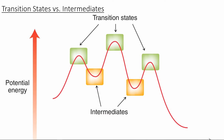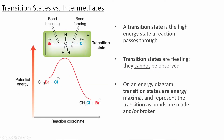On a potential energy diagram, there are local minima and maxima to be aware of. Whenever we have a local maximum of energy, these are going to be transition states between a starting material and an intermediate. When we reach a low energy point in the reaction coordinate diagram, we're at an intermediate. A transition state is not going to be a molecule that we would be able to isolate. We can isolate an intermediate — we're forming a new molecule when we reach an intermediate. But transition states can't be observed or isolated — these are a high energy state that a reaction passes through.